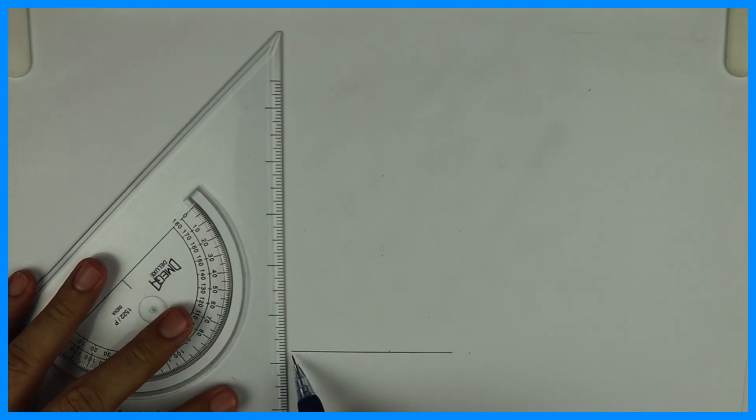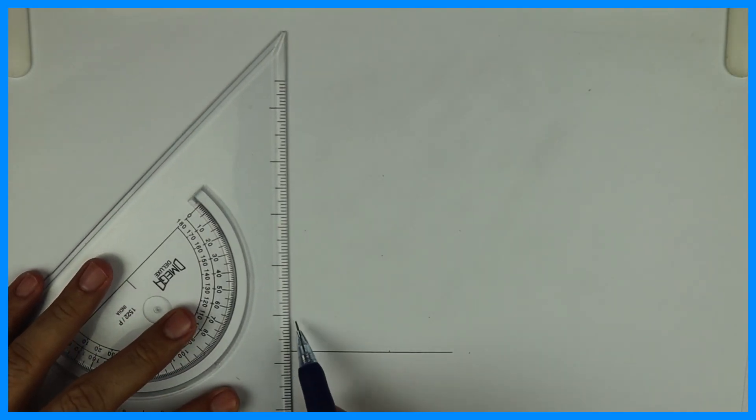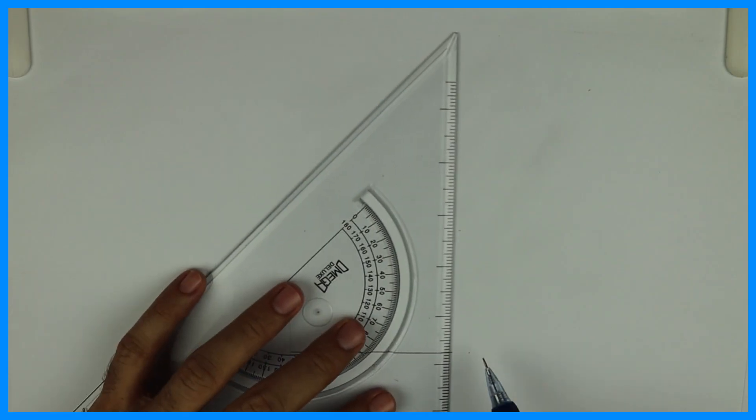So first we will draw a line of 80 mm. We'll do dimensioning. This is A, this is B.